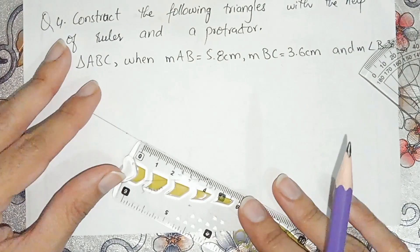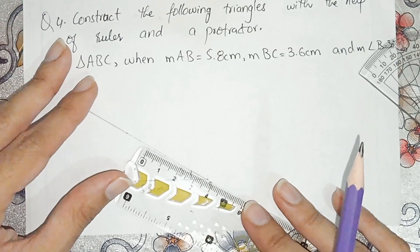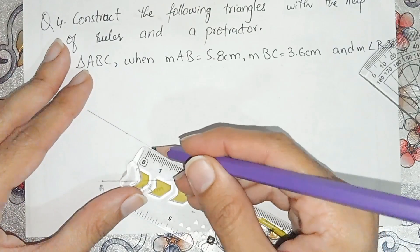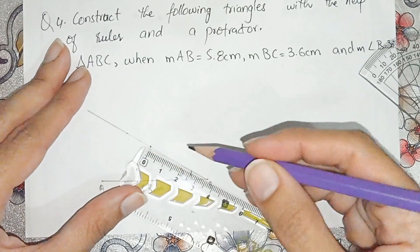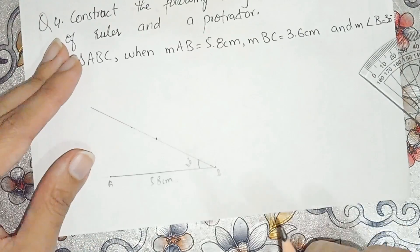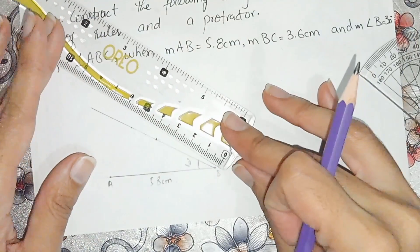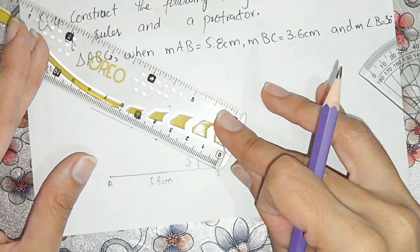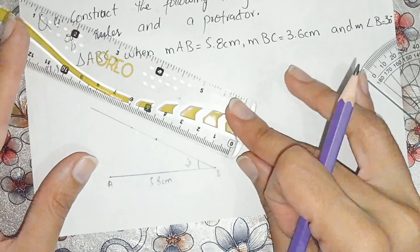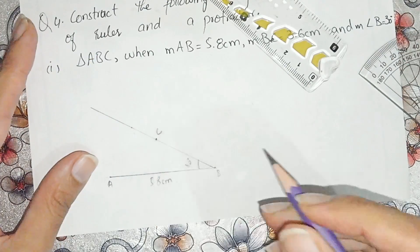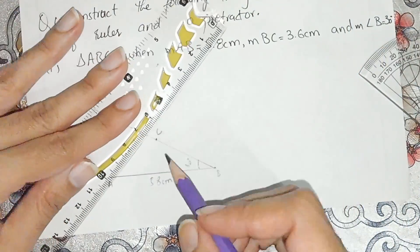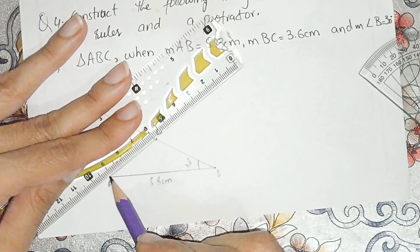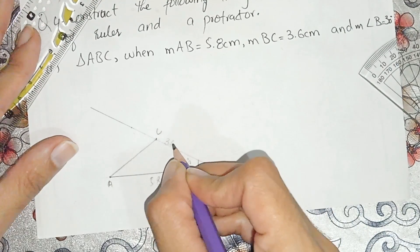Draw a mark from here using the ruler's help. This is 3.6 cm. Place the scale from zero to 3.6 cm and this is point C. Match the point — this is our required triangle with BC equal to 3.6 cm.